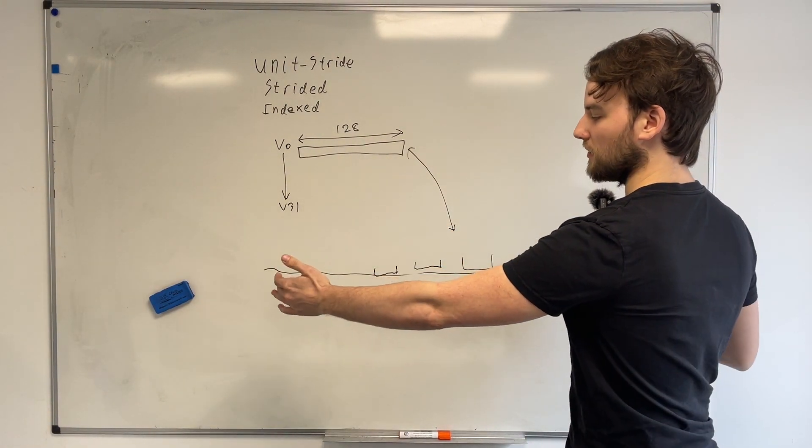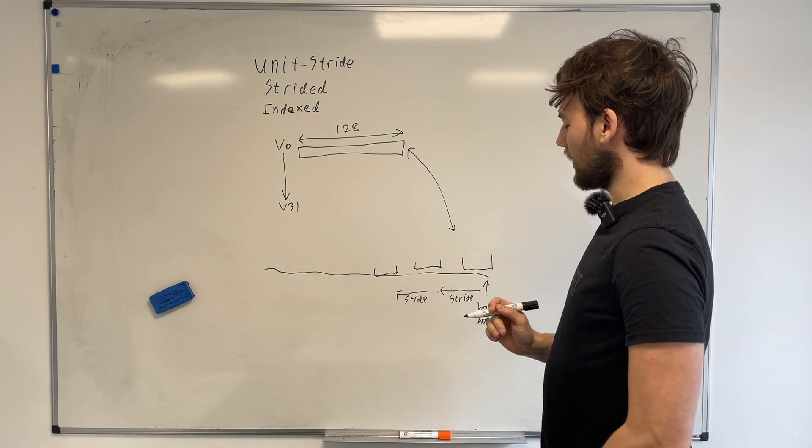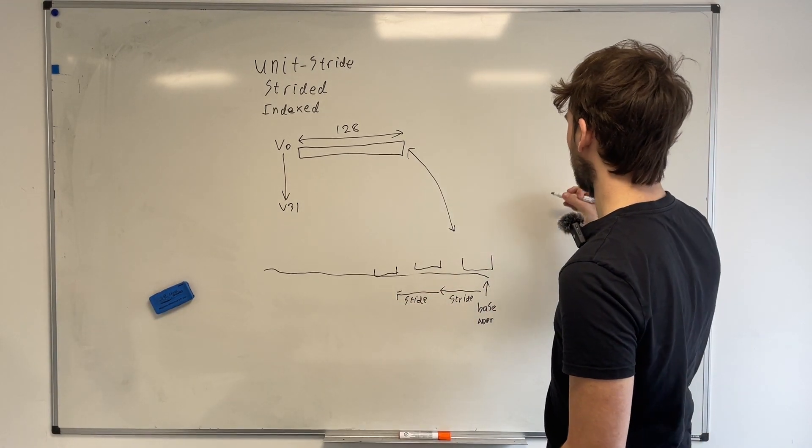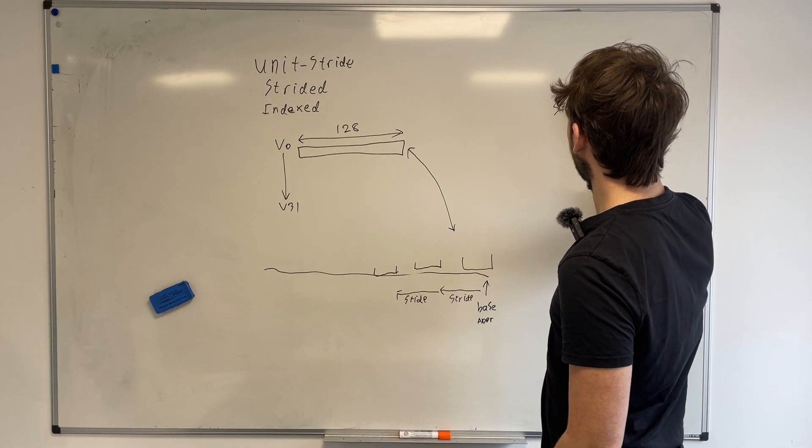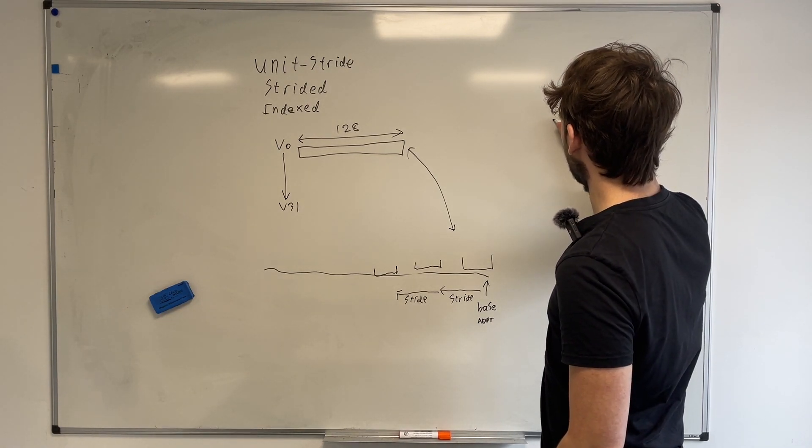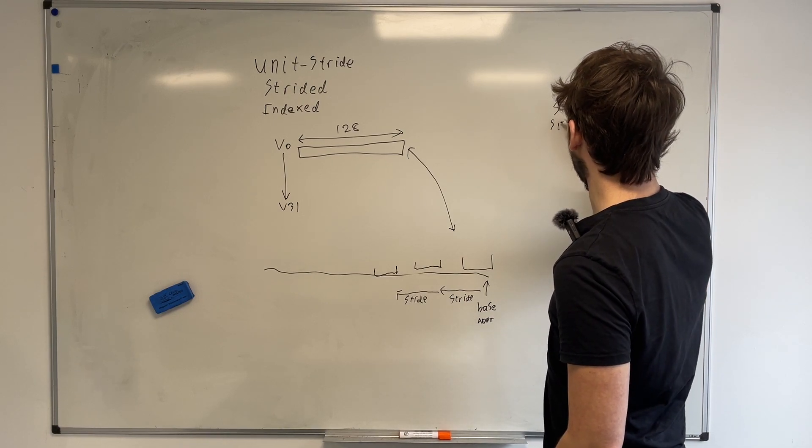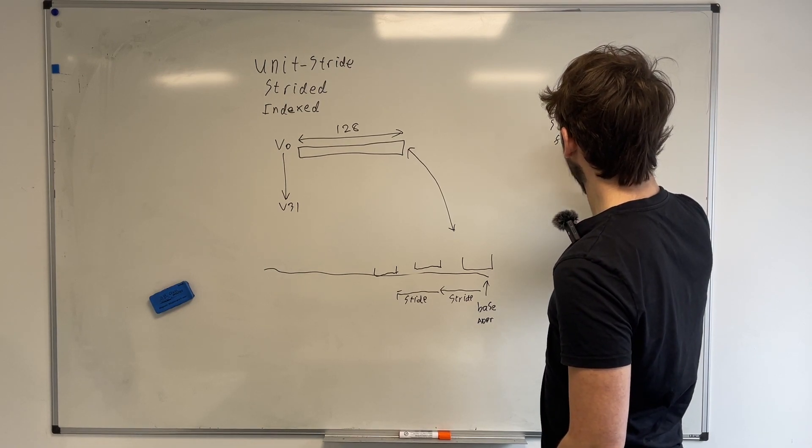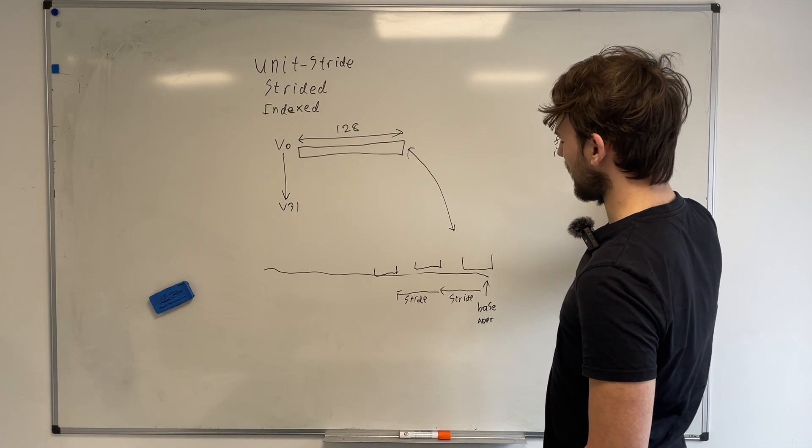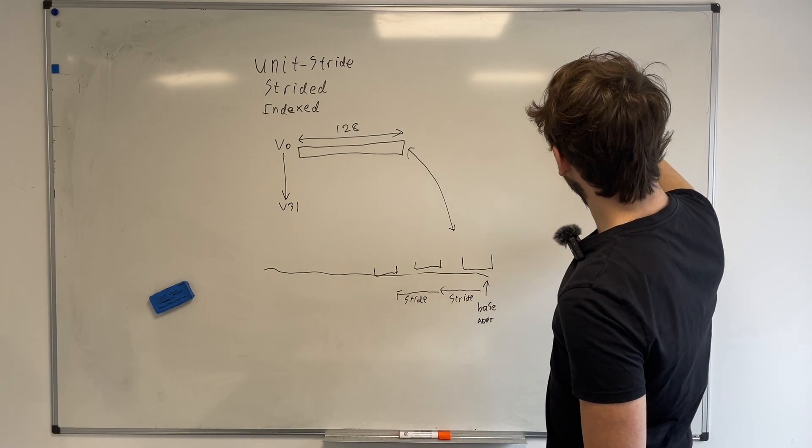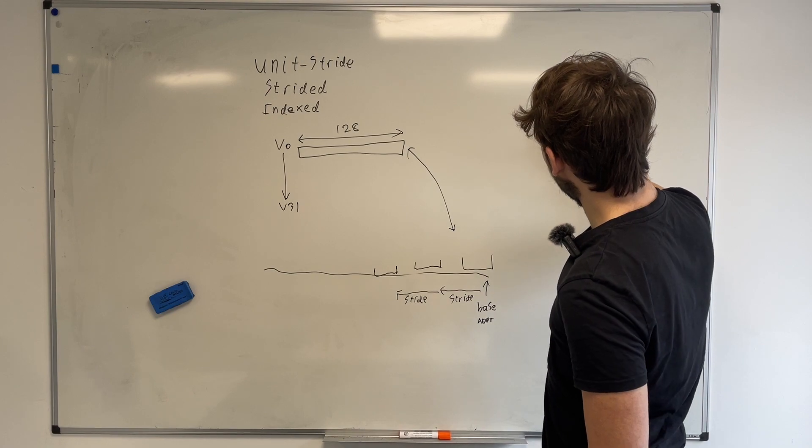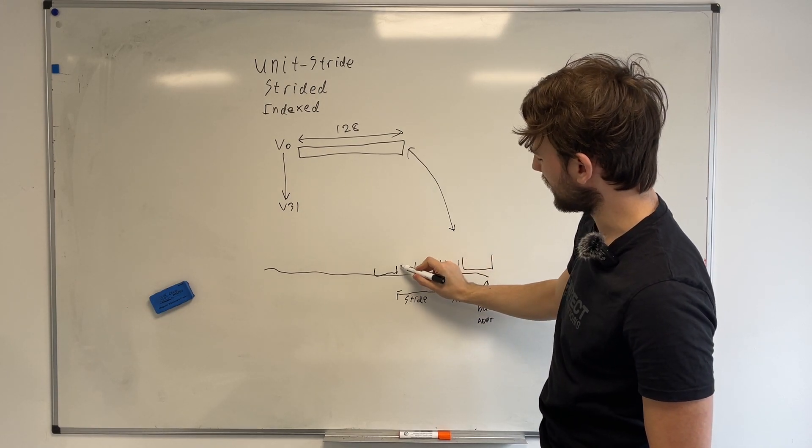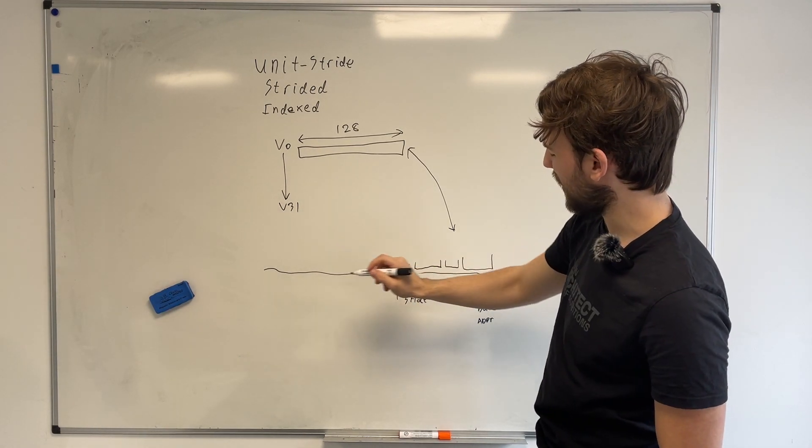And so what this allows you to do is it allows you to pick up individual elements from memory, as long as they're spaced contiguously. So a really good example of something like that would be if you had a C style struct that had many elements in it. So if you had an integer, and then a float, and then another integer, and you just wanted to pick out the floats, you could set the stride to reach into the struct and just grab the elements you want. Because if this is the integer you don't want in here, and this is the integer you don't want in here, you can jump along and just pick what you want.